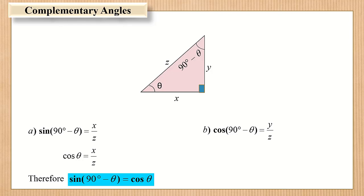Cosine of 90 degrees minus theta is equal to y over z. Cosine of 90 degrees minus theta is equivalent to sine theta.